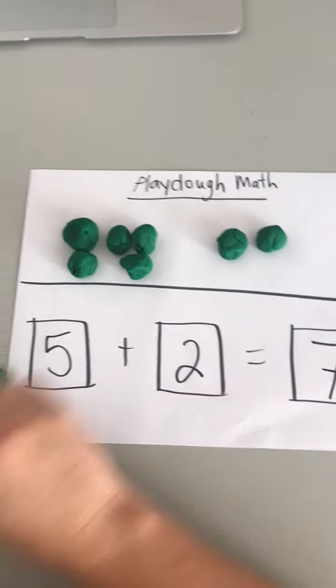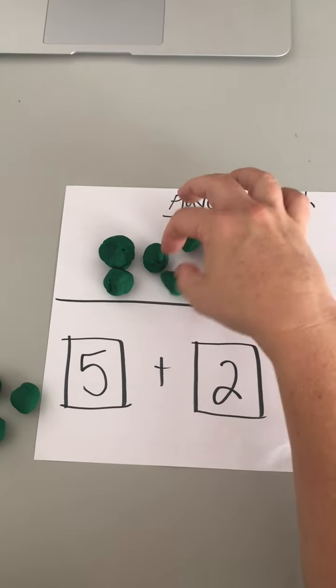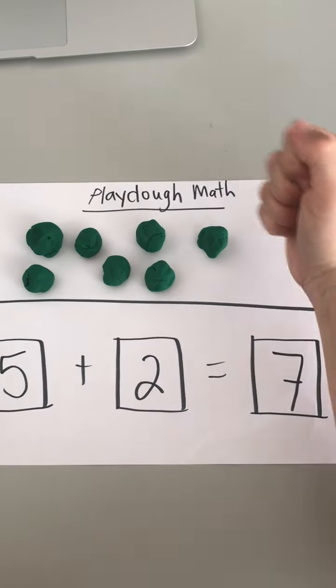You can also do this and change the addition sign to a subtraction sign. So you can start with 7 and subtract 2 and so you get to smash 2 of them.